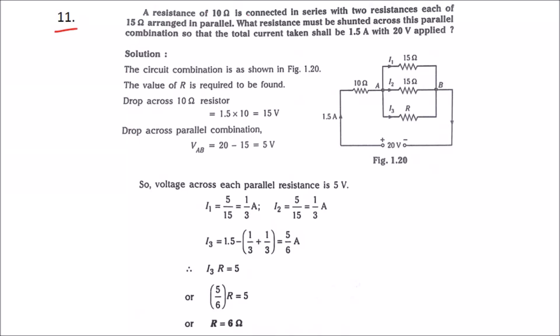Problem 11: A resistance of 10 ohms is connected in series with two resistances each of 15 ohms arranged in parallel. What resistance must be shunted across this parallel combination so that the total current shall be 1.5 amps and 20 volts applied? So as we can see, three resistances are in parallel, and this combination is in series with a 10 ohm resistance. They are asking the value of R, the resistance in parallel with the two resistances.